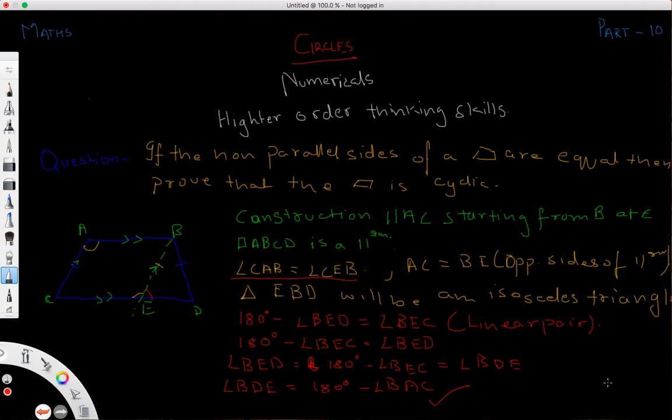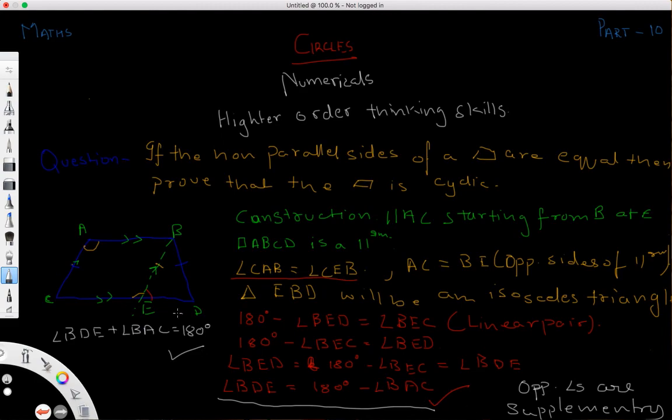We all know that there is a property of cyclic quadrilaterals that the opposite angles are supplementary. Thus what does supplementary mean - that both will add up to 180 degree. So if we simplify this thing, angle BDE plus angle BAC is equal to 180 degree. So this is what we want and we have proved thus that this will be a cyclic quadrilateral.